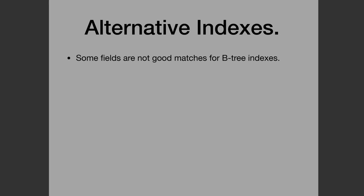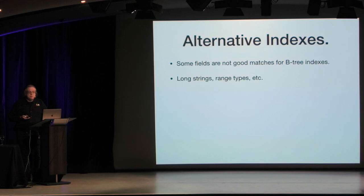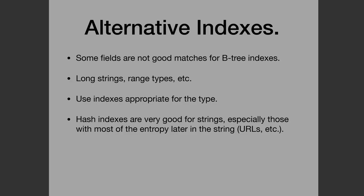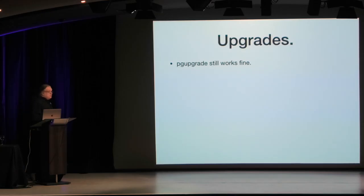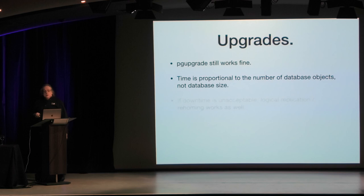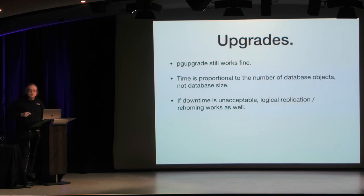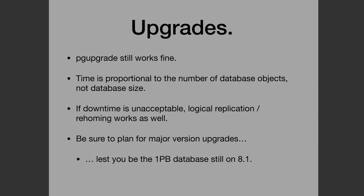Consider using indexes that aren't B-trees - some fields are just not good matches. Range types and very long strings are not great fits for B-trees because the entire value has to be propagated into the index. For long strings, hash indexes are very good, especially those where most of the entropy is late in the string, like URLs. Consider partitioning: look for tables that can benefit from it - time-based partitioning for time series data, hash-based for tables that are large intrinsically like a customers table. Postgres 10 and 11 have great partitioning functionality, much improved over the old-style hack-together partitioning. Also consider parallel query execution - increase the number of workers and per-query parallelism. pg_upgrade still works fine at this size. But if downtime is unacceptable, you can do logical replication and rehoming.